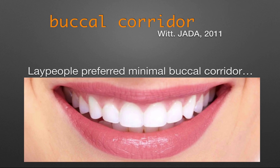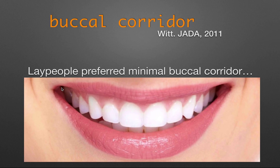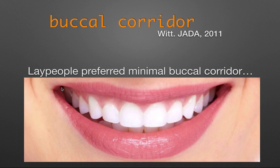Buccal corridors are the negative spaces created between the buccal surface of the posterior teeth and the inner wall of the cheek. Too much buccal corridor results in large empty spaces, while too little looks artificial. People may have different opinions about how buccal corridors affect smile attractiveness, but as a clinician I need to have a predictable way to control this space.